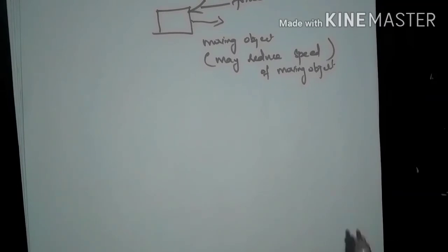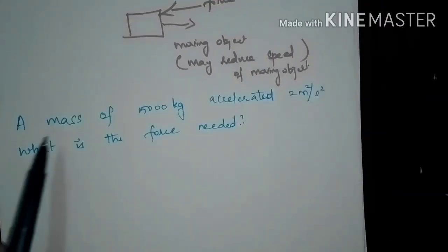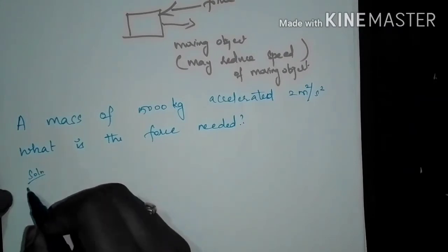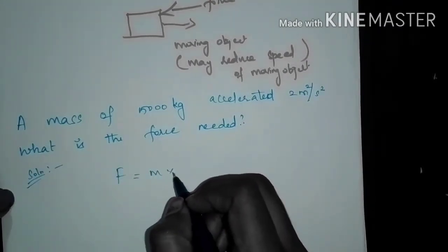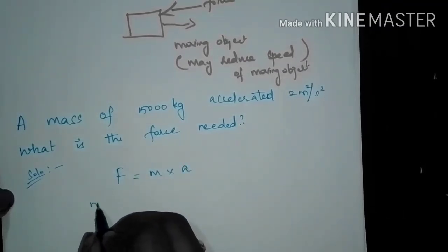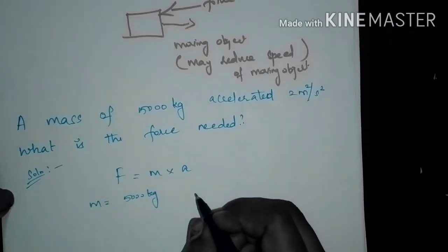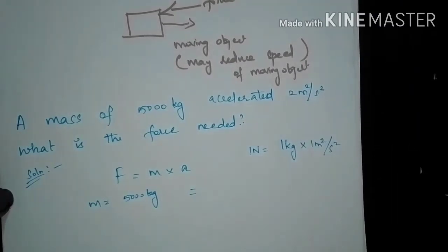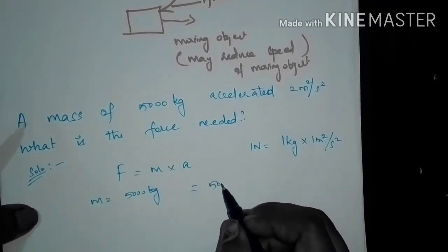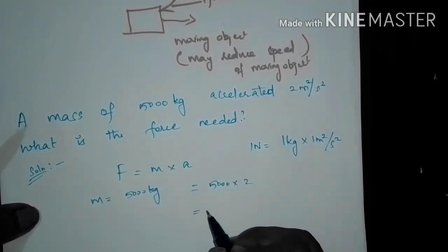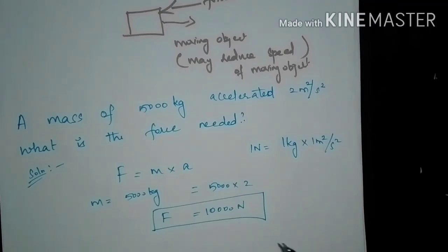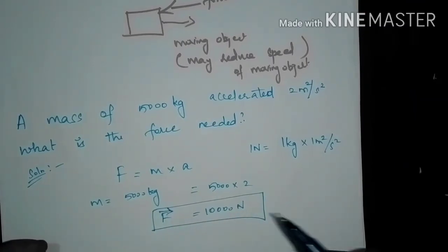Let us solve a problem regarding force. A mass of 5000 kilograms is accelerated at 2 meters per second squared. What is the force needed? The equation of force is F = mass × acceleration. The given mass is 5000 kg — if given in grams, convert to kilograms since 1 Newton equals 1 kg·m/s². So, 5000 × 2 = 10,000 Newtons. The direction of force must also be mentioned if specified in the problem.